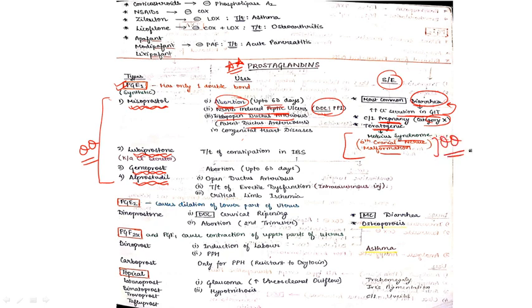Now going to lubiprostone, it is used for the treatment of constipation in IBS patients. Gemeprost can be used for abortion up to 63 days. Alprostadil, the most common use is for the treatment of erectile dysfunction, but can also be used for opening ductus arteriosus and critical limb ischemia.